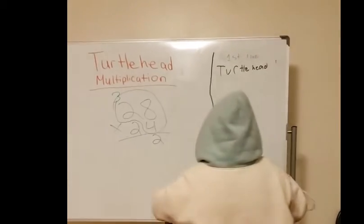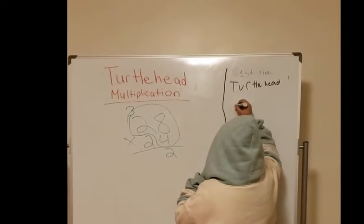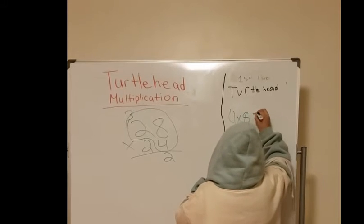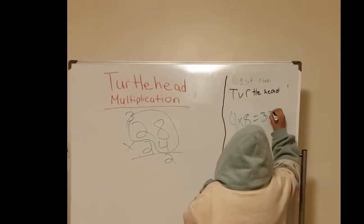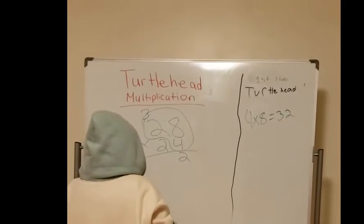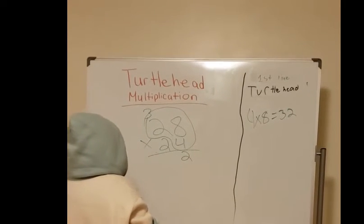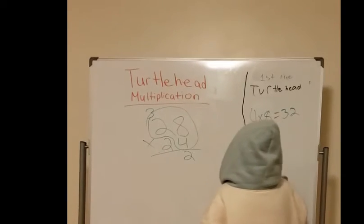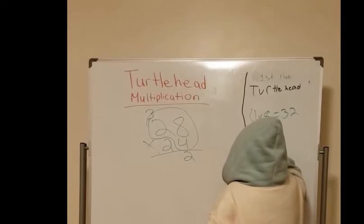So 4 times 8 is 32. So I would write it on the side. Now I would do 4 times 2. 4 times 2 is 8. So I would write it on the side too.